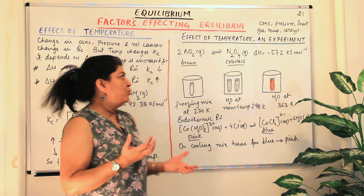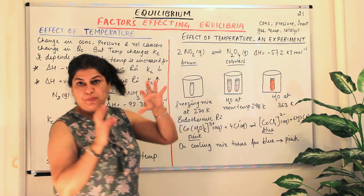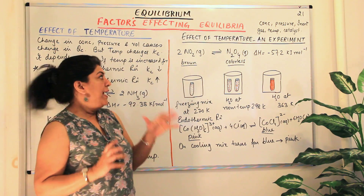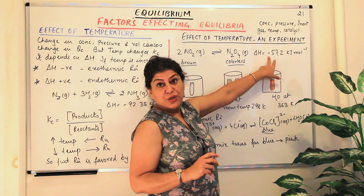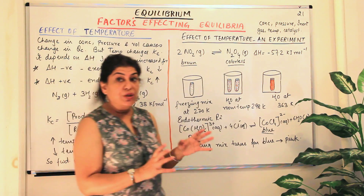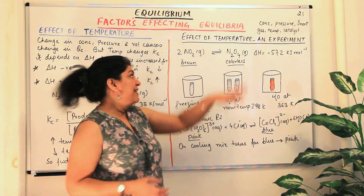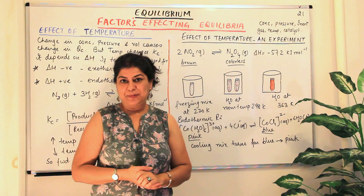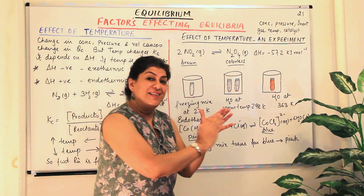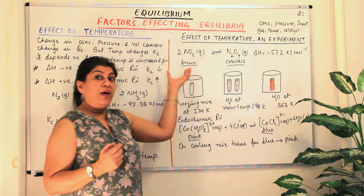There is an experiment we can do to see this effect in color. NO2 gas dimerizes to give N2O4, and this reaction is also exothermic with delta H equal to minus 57.2 kJ/mol. The color of NO2 is brown, while N2O4 is colorless. So if the reaction proceeds in the forward direction, the brown color becomes lighter and lighter. If it runs in the backward direction, it becomes darker and darker brown.